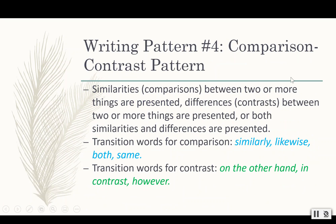Our next writing pattern is comparison and contrast. Comparison means you're comparing two or more things — looking at how they're similar to each other. Contrast is when you're looking at the differences between two or more things. In this kind of paragraph, they could be just looking at the similarities, only looking at the differences, or looking at both. For comparisons, authors might use words like similarly, likewise, both, or same. For differences, they might say on the other hand, in contrast, or however.